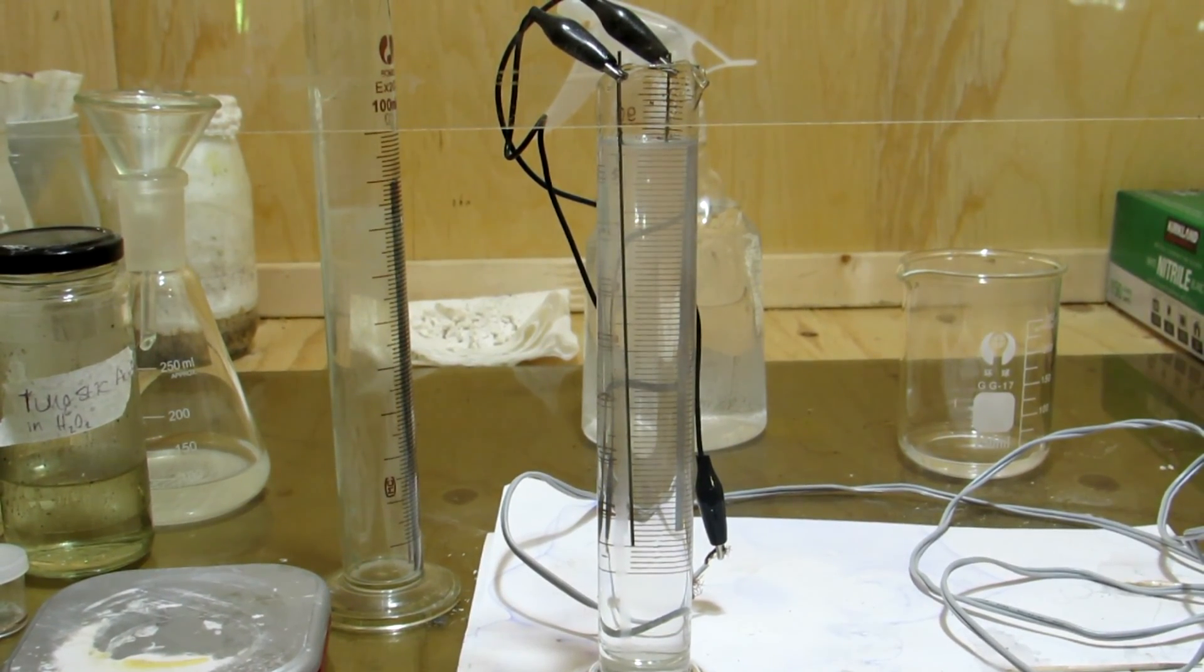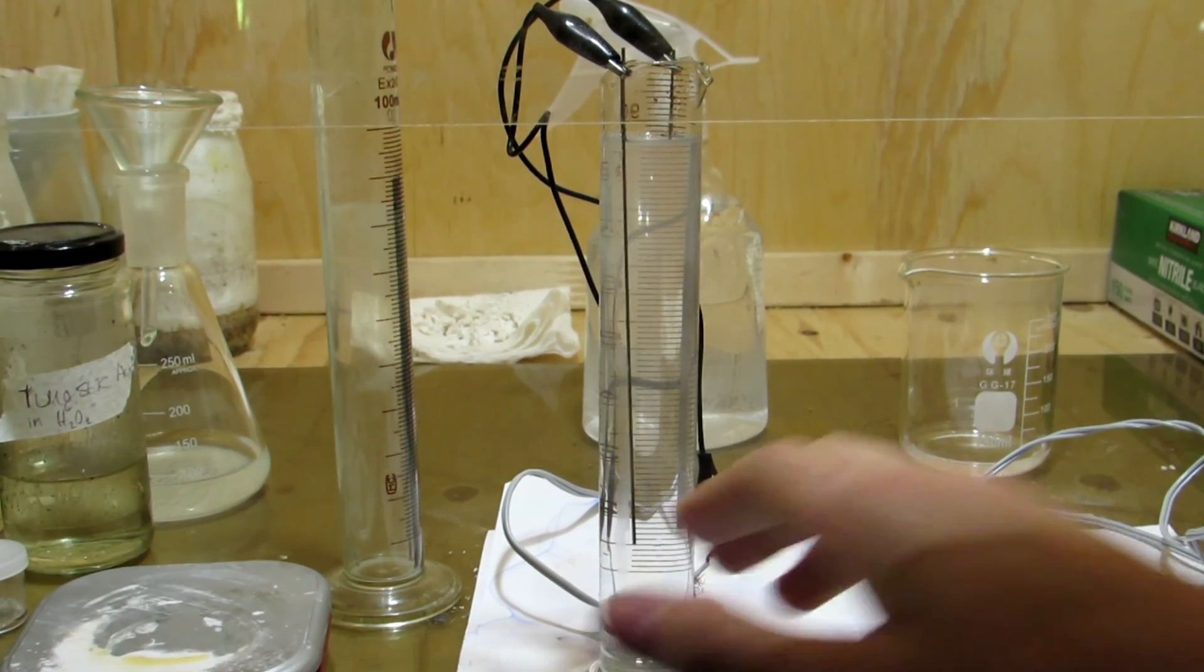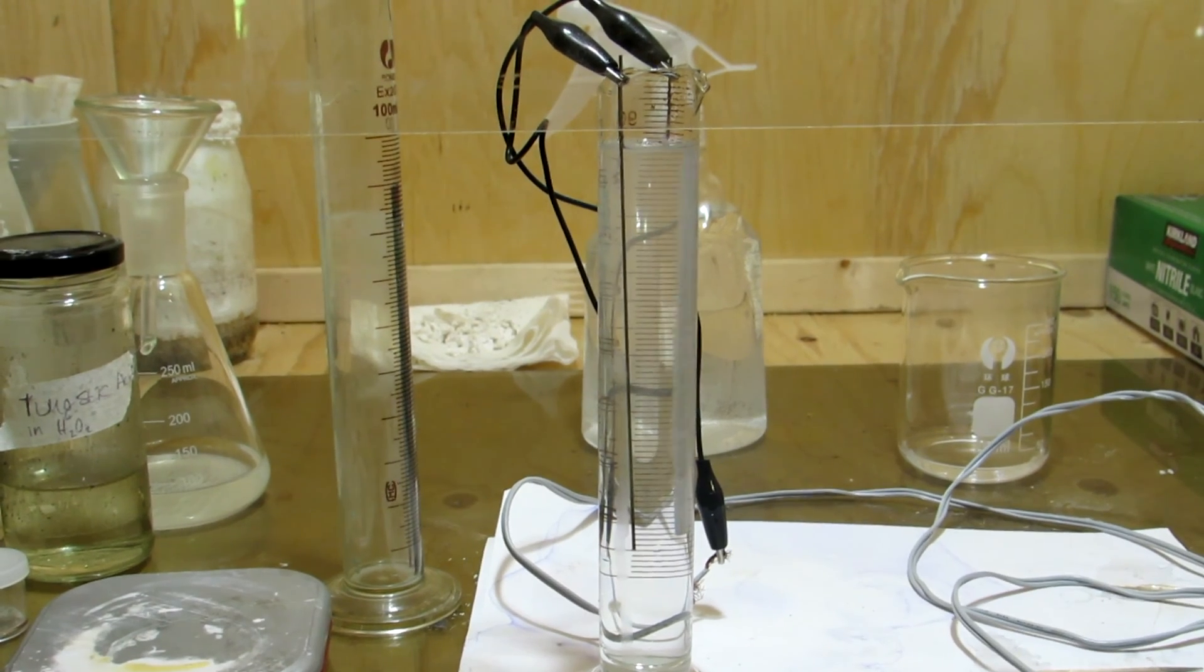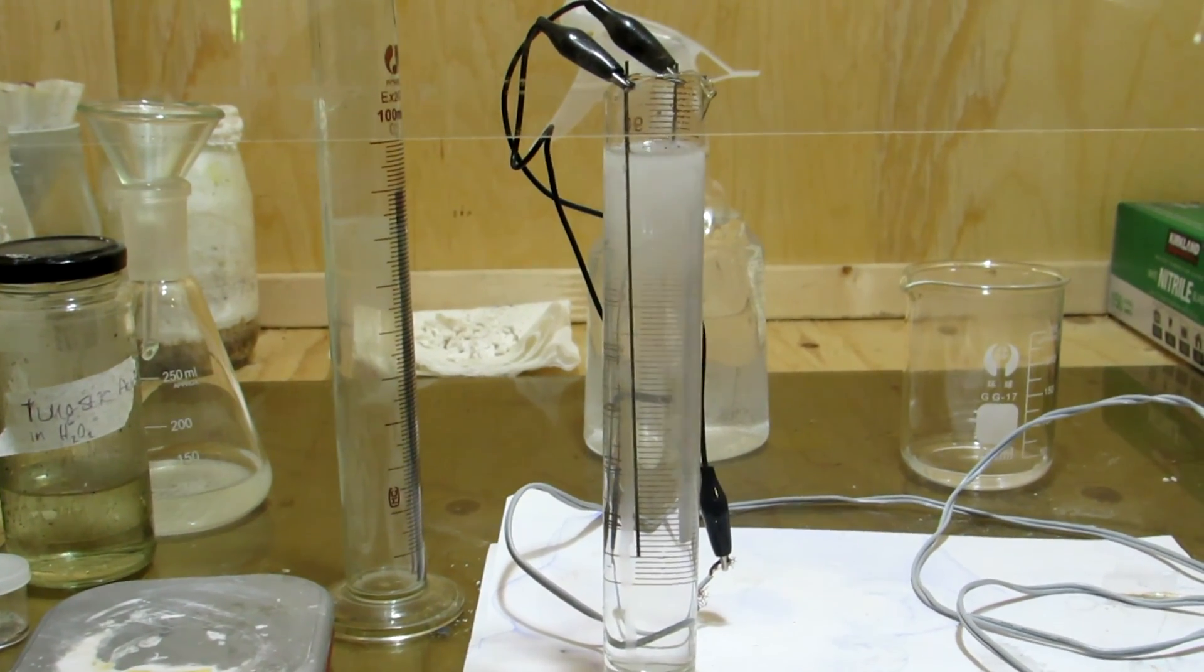20 grams of sodium hydroxide dissolved in 100 milliliters of water is then added to the graduated cylinder. The other ends of the alligator clips are attached to a 5 volt DC power supply to begin the dissolution.